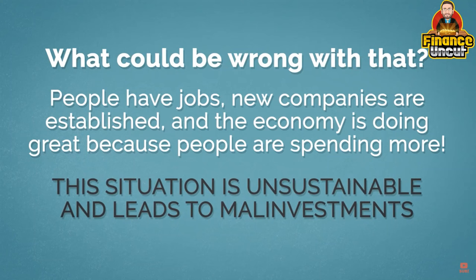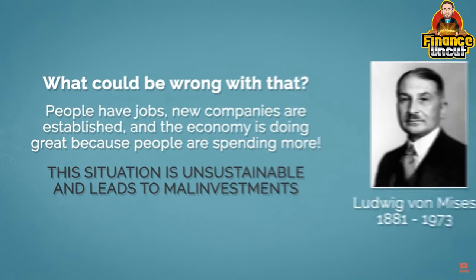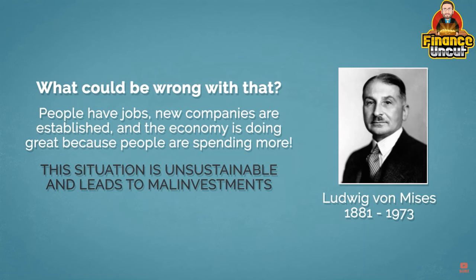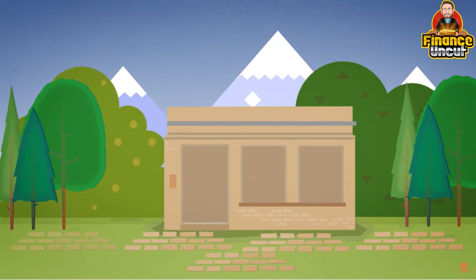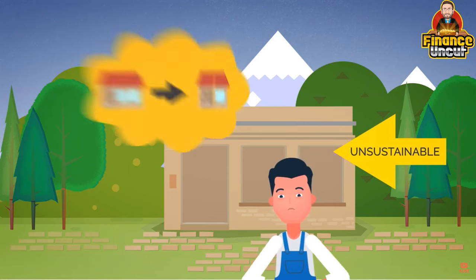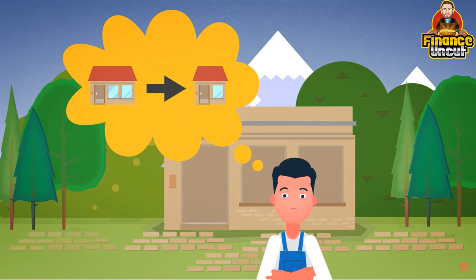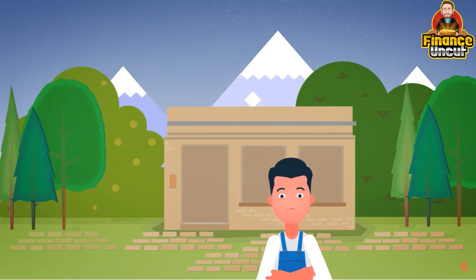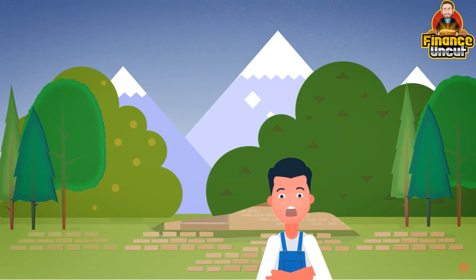Here's the problem. This situation is unsustainable and leads to erroneous investments — or mal-investments, as Ludwig von Mises called them. He illustrated this using a story about a master builder who started constructing a house thinking he had enough bricks, but in reality had 20% less than he needed. His design was not sustainable, but he was not aware of it. He only realized he didn't have enough bricks after he started to run out of them.